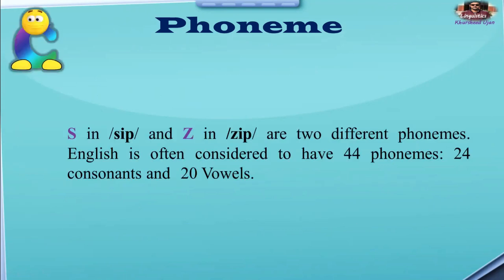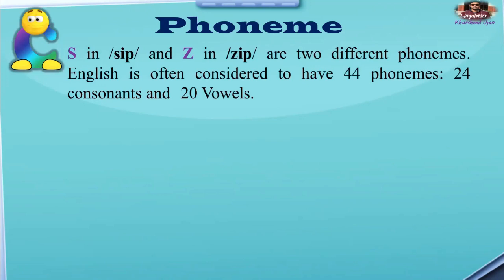Here is another example: /s/ in 'sip' and /z/ in 'zip' are two different phonemes. English is often considered to have 44 phonemes — 24 consonants and 20 vowels. It means all the sounds in a language are known as phonemes, and in English there are 44, divided into consonant and vowel phonemes.